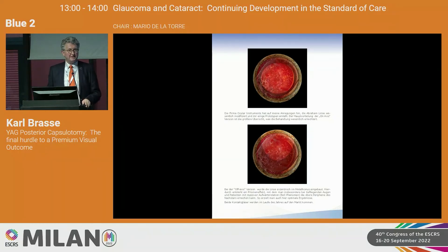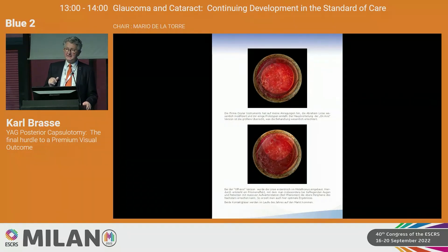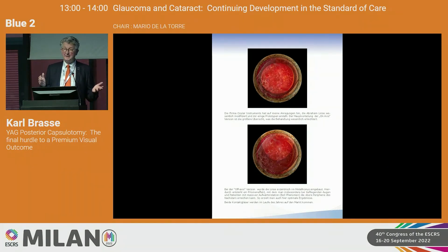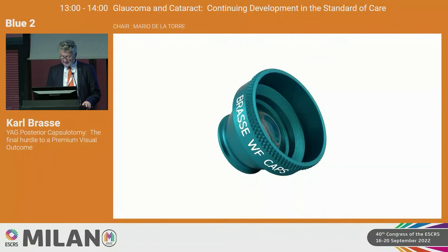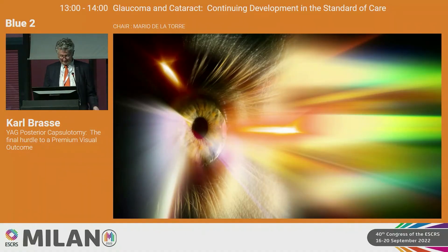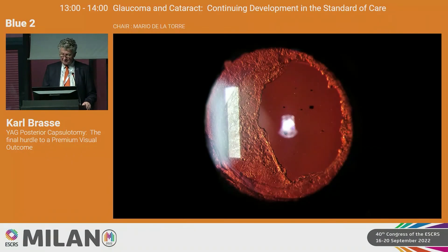Furthermore, there's a lens in development where we have decentered the plus lens to create a prism. Then you are even able to treat deep-set eyes, or patients that squeeze the eyes and where you have Bell's phenomenon. It's called the Brussels lens, like the Paul Singh lens for vitreolysis. You bring energy into the eye — be careful what you do.